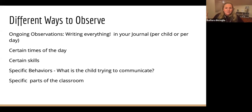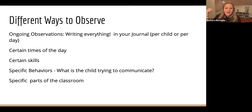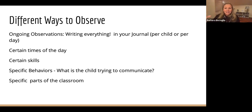Let's focus on some different ways to observe. You can have your ongoing observations where you're kind of just journaling, writing down everything. You can do it per child or per day, just really getting your thoughts out. There can be a lot of value in that, because sometimes you don't realize how important that one thing you wrote down was. Getting into the habit of having these ongoing observations is fabulous.